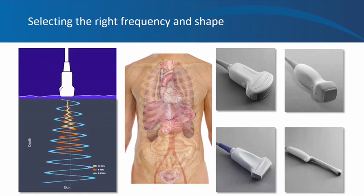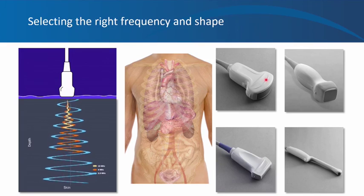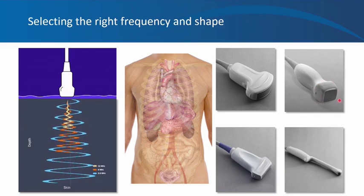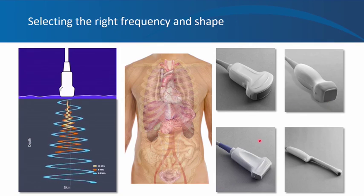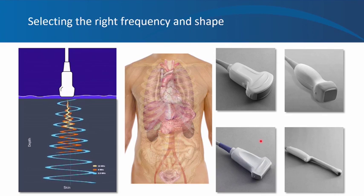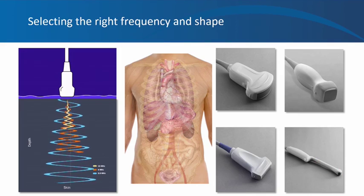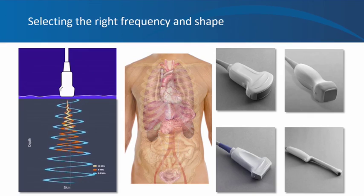The curvilinear transducer is used to image the abdomen; its shape allows imaging of larger organs. The phased array, or cardiac probe, has a small squarish mouth that allows maneuvering between ribs — it is also a low-frequency probe, so it can be used for kidney ultrasound if no curvilinear probe is available. The linear probe has high frequency and is used for vascular or superficial musculoskeletal ultrasound. The intracavitary probe is used for intravaginal, pararectal, or oral scans and offers high-frequency, high-resolution imaging.